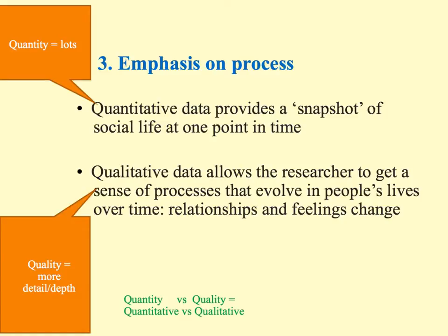Here's how I try to remember the difference between quantitative and qualitative. Quantitative has the word 'quantity' almost in it, and quantity means lots — so quantitative data provides a snapshot of social life at one point in time with lots and lots of numerical data. That's also one of the criticisms: it's only a snapshot of how things are at that very point in time. Qualitative data — the word I can see is 'quality' — is much more in-depth and detailed, quality over quantity. This allows the researcher to get a sense of the processes that evolve in people's lives over time, such as relationships, feelings and sources of identity.